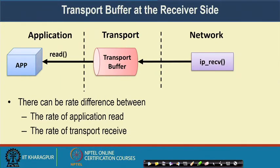Coming to buffer management: as discussed in the last class, at both sender and receiver sides we maintain a transport layer buffer, implemented as a software queue. At the sender side, data is placed in that queue and the transport layer fetches it based on the rate control algorithm, then sends it to the IP layer. At the receiver side, data from the network layer is placed in the queue and the application fetches it from there.